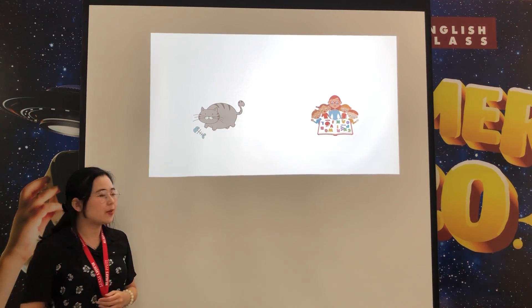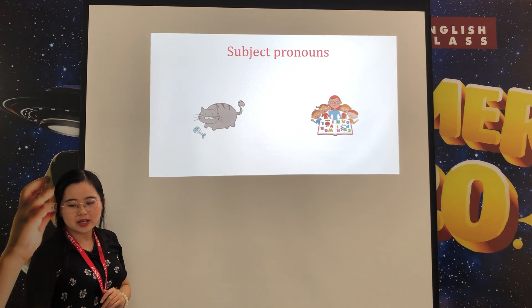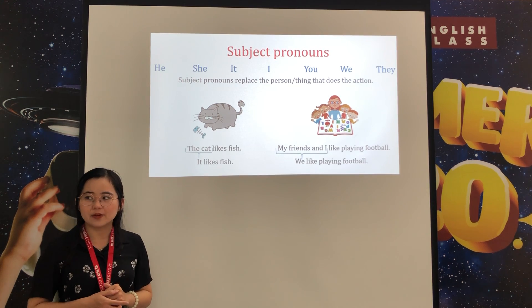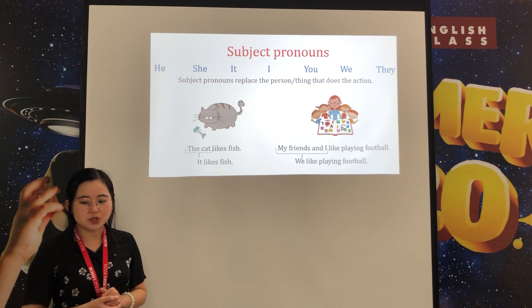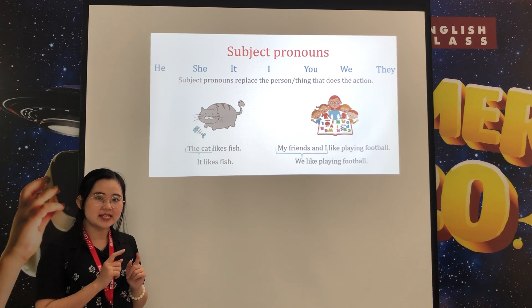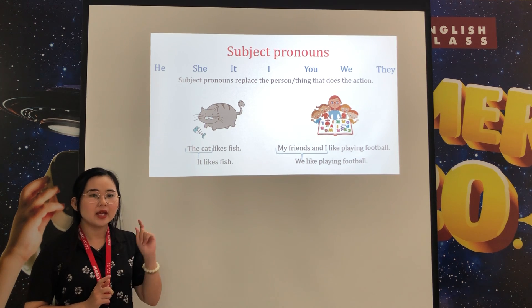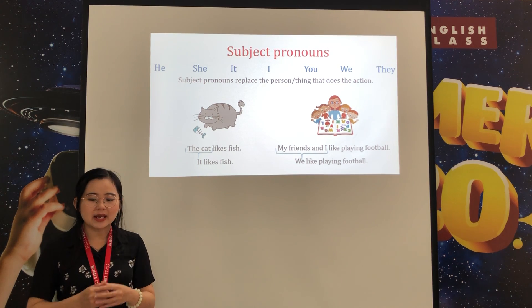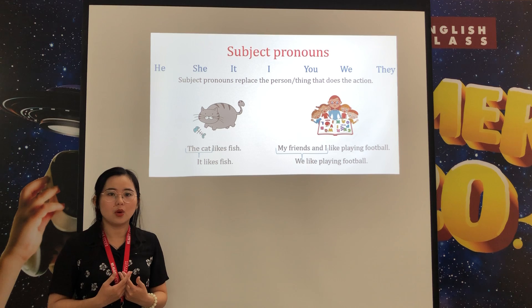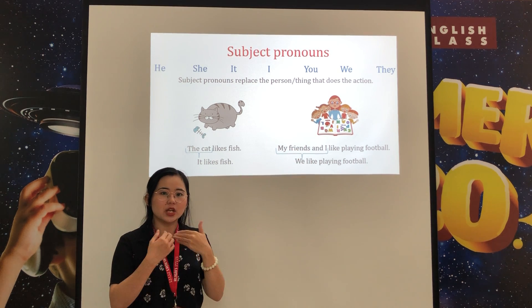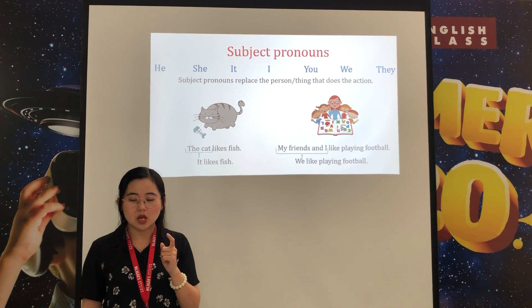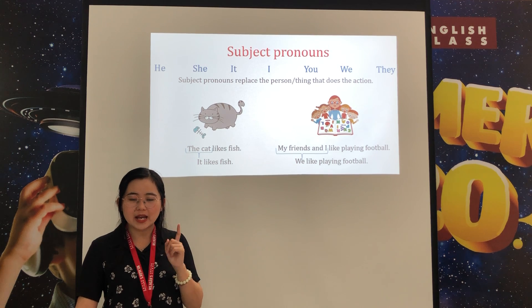Now look at the picture. What can you see here? It's a cat. So we can say 'the cat likes fish,' or we can use the subject pronoun 'it' to replace the noun 'the cat.' So we can say 'it likes fish.' Next: 'My friends and I like playing football.' Since it includes me, we use the subject pronoun 'we.' We can say 'we like playing football.'